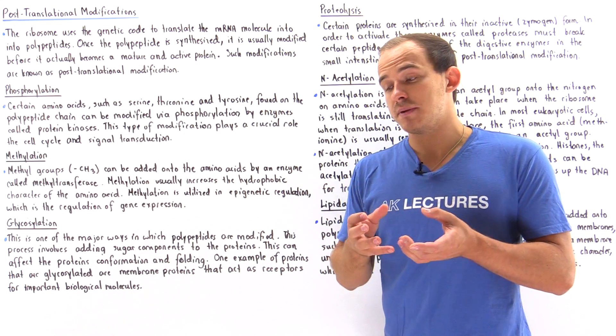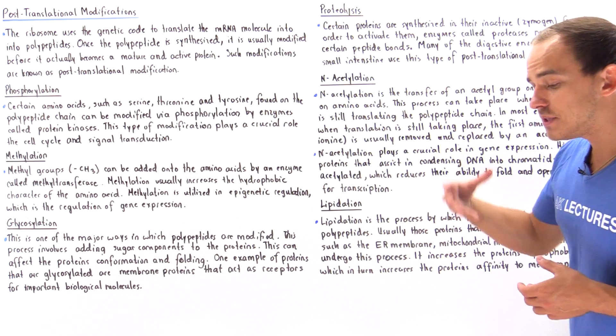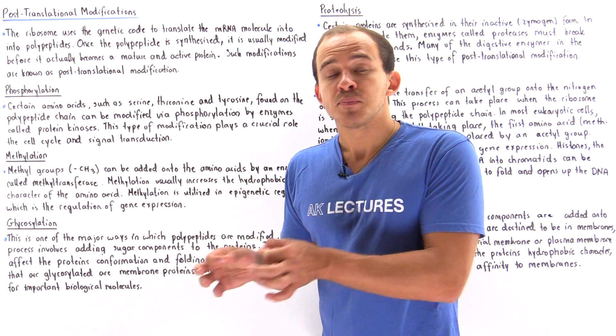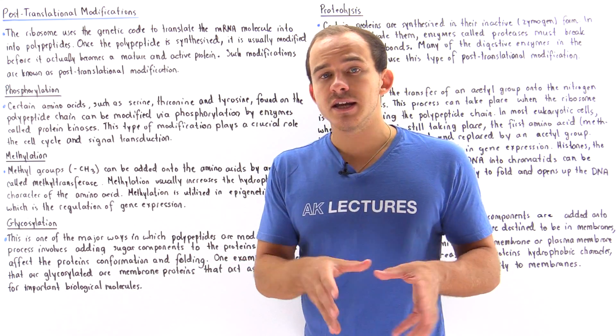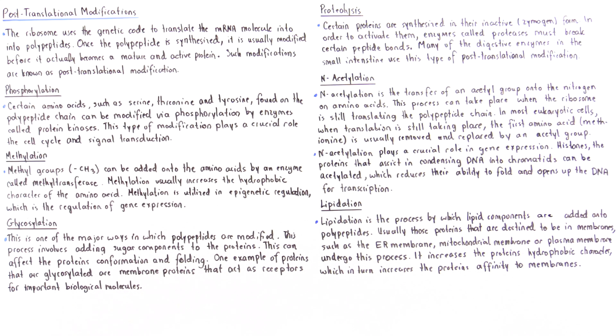Because membranes consist of lipids, by adding a lipid component onto our protein, we're increasing that protein's affinity to the membrane. This process is known as lipidation.